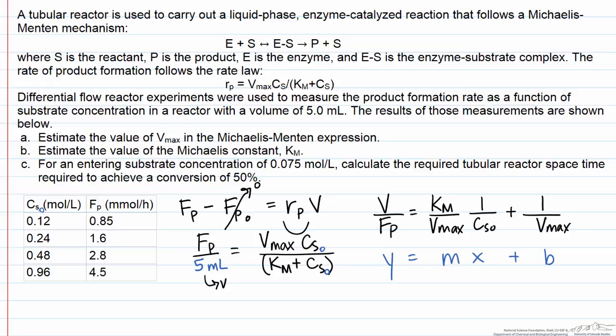For part C, we want to take some different conditions, so a different entering substrate concentration of 0.075 molar, and compute now, not at differential conversion but at quantitative conversion of 50%, how much space time we need in the reactor to achieve that actual conversion. To do this, again, we'll set up a material balance, but in this case, we're going to be using a tubular reactor balance instead of a differential reactor balance.